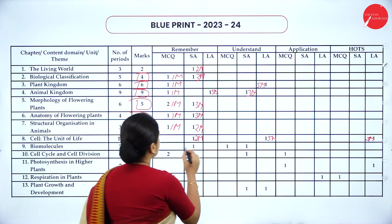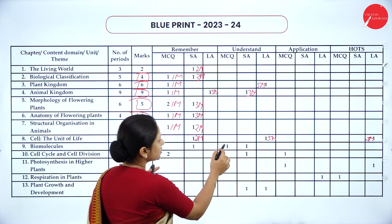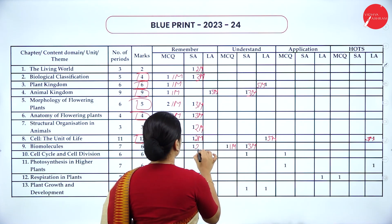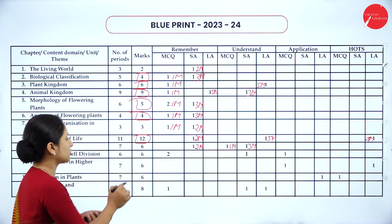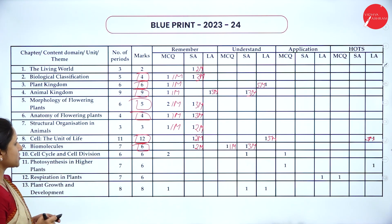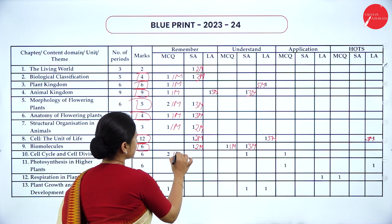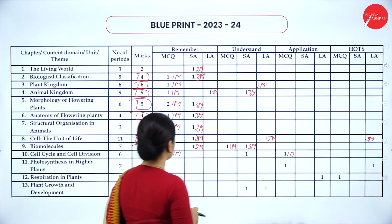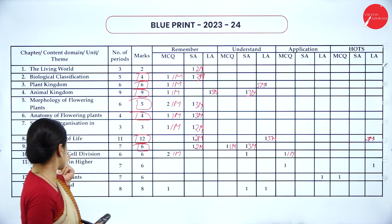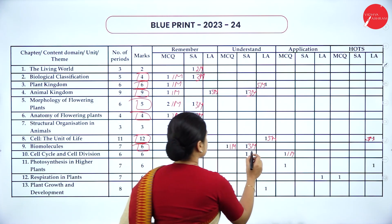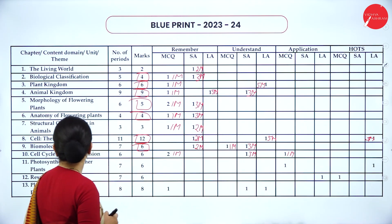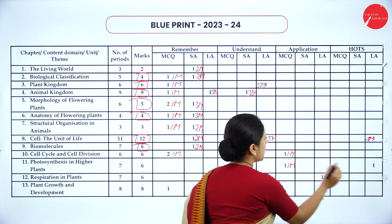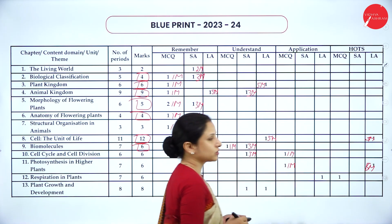From Biomolecules, one MCQ, one 3-mark, and one 2-mark question will be asked, totalling 6 marks. Cell Cycle and Cell Division has 3 MCQ questions and one 3-mark question. Photosynthesis in Higher Plants totals 6 marks: one MCQ for 1 mark and one 5-mark question.